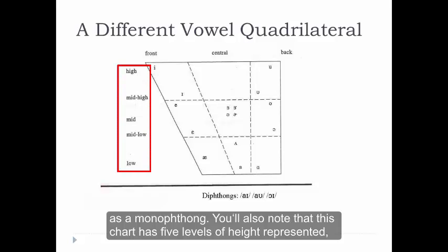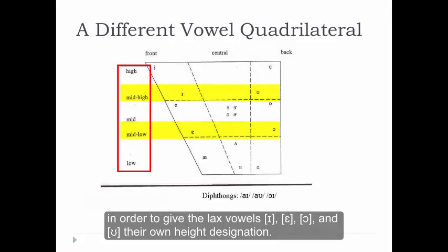You'll also note that this chart has five levels of height represented in order to give the lax vowels [ɪ], [ɛ], [ɔ], and [ʊ] their own height designation.